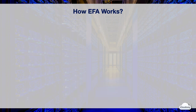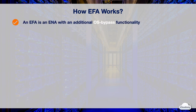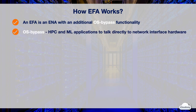Elastic Fabric Adapter, or EFA, is a network device that you can attach to your EC2 instance to accelerate HPC and machine learning applications. An EFA provides all the functionality of the ENA with an additional OS bypass capability. OS bypass is an access model that allows HPC and machine learning applications to talk to the network interface hardware directly, for low latency and reliable transport functionality.